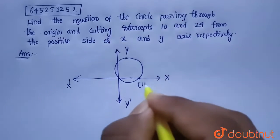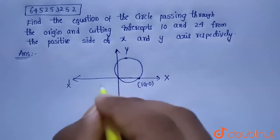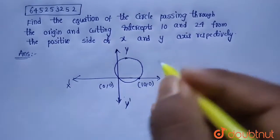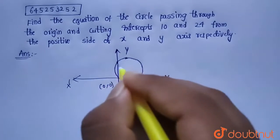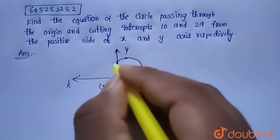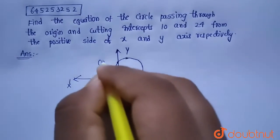So it will become 10 comma 0 and this is origin 0 comma 0. Given the y intercept is 24 which is also made on the positive side of y axis, so it will become 0 comma 24.